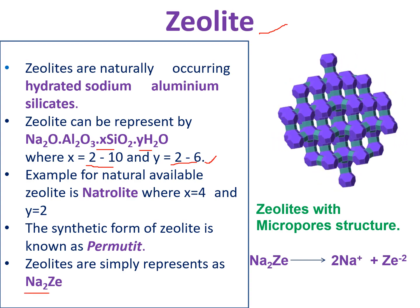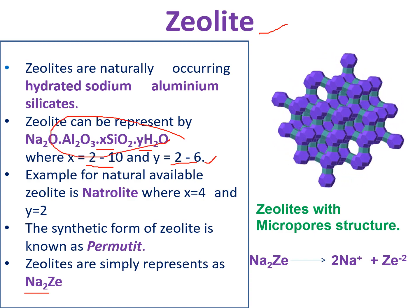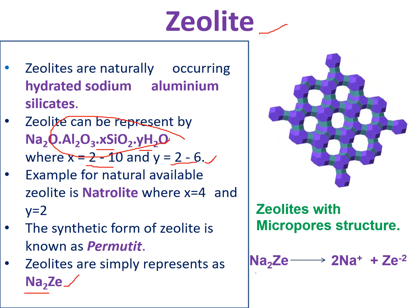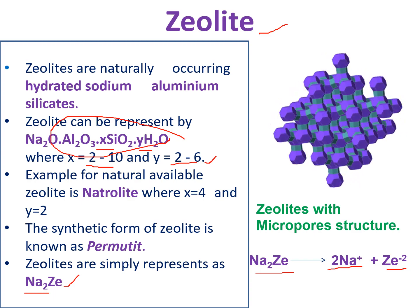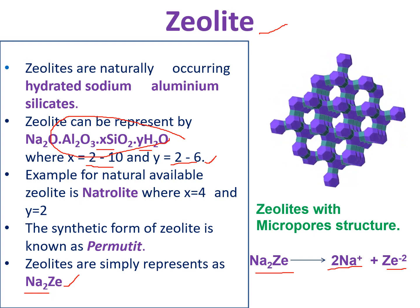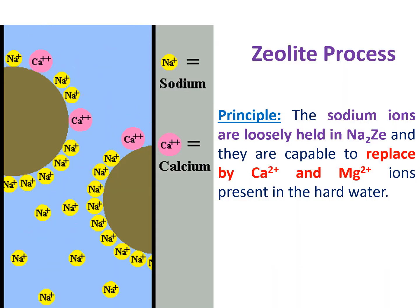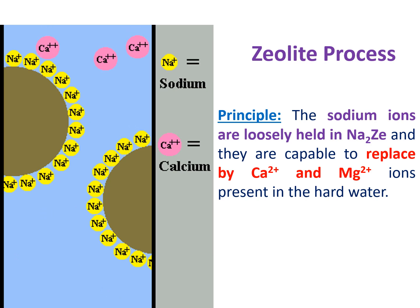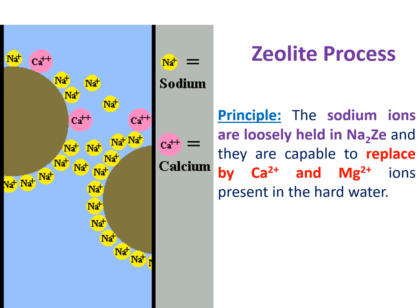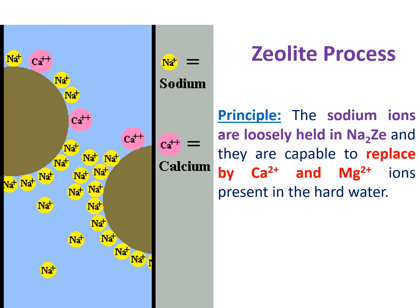Whatever the zeolite — naturalite or permutite — it can be represented as Na₂ZE, where ZE represents the aluminosilicate framework. Na₂ZE in its dissociated state produces 2 Na⁺ ions and ZE²⁻ ions. The basic principle of the zeolite process is that zeolite has a porous texture and loosely bound Na⁺ ions on its surface. When hardness-causing salts — calcium²⁺ and magnesium²⁺ — approach the zeolite, the Na⁺ ions are mutually exchanged by the hardness-causing cations.